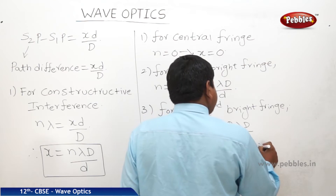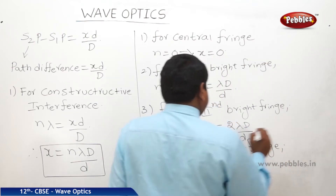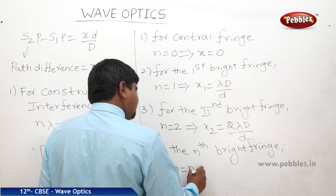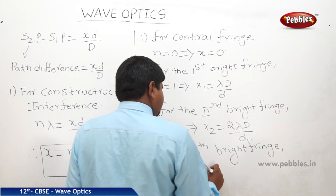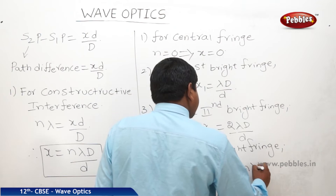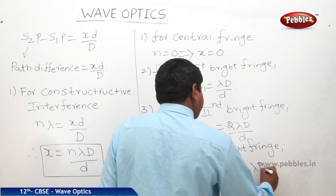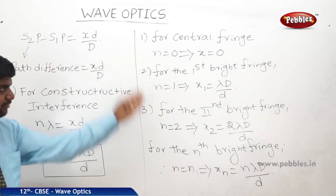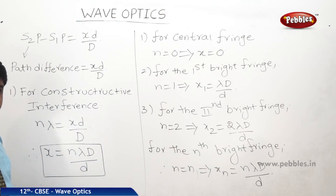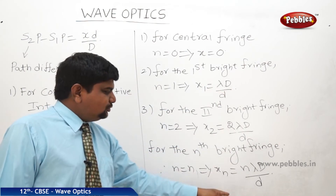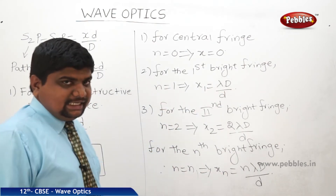For the nth bright fringe, n is equal to n, therefore xn is equal to n lambda D by small d. This way we can find out the bright fringe values. The order of the bright fringes is 1, 2, 3, and so on up to n.